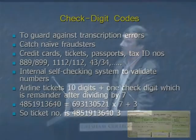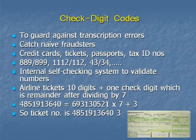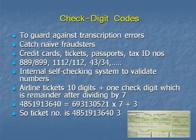This robustness against making mistakes is all around us in a series of encodings known as check digit codes. You see them on all sorts of cards and tickets and so forth — you'll have many of them in your pocket at the moment. By the end of the lecture, you'll be aghast at what you're carrying around with you.